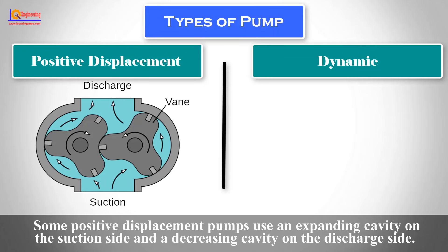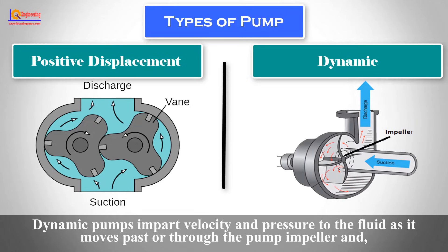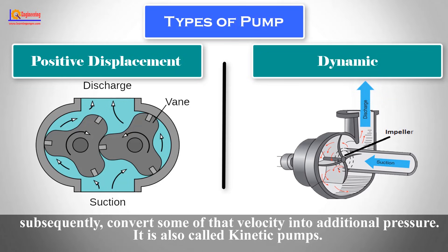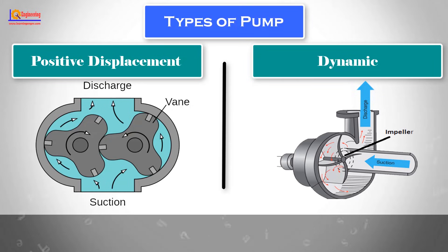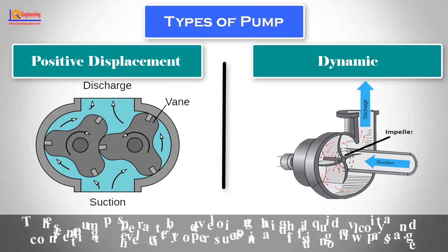Some positive displacement pumps use an expanding cavity on the suction side and a decreasing cavity on the discharge side. Dynamic pumps impart velocity and pressure to the fluid as it moves past or through the pump impeller, and subsequently convert some of that velocity into additional pressure. They are also called kinetic pumps. These pumps operate by developing a high liquid velocity and converting the velocity to pressure in a diffusing flow passage.